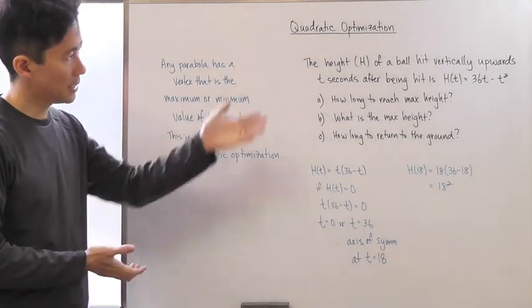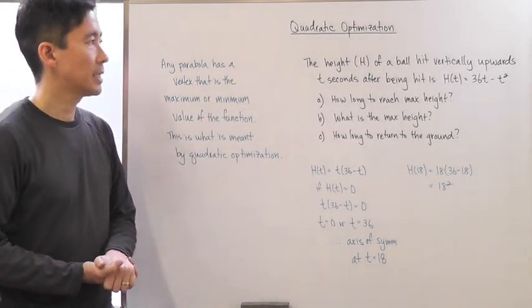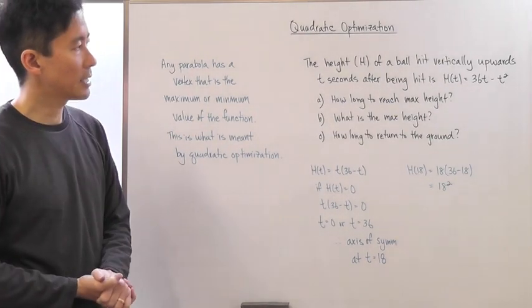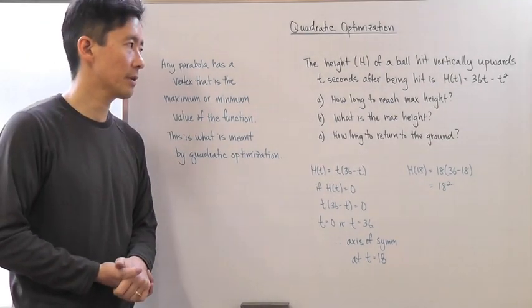Let's take a look at an example. It says the height h of a ball hit vertically upwards t seconds after being hit is given by the equation h(t) = 36t - t².